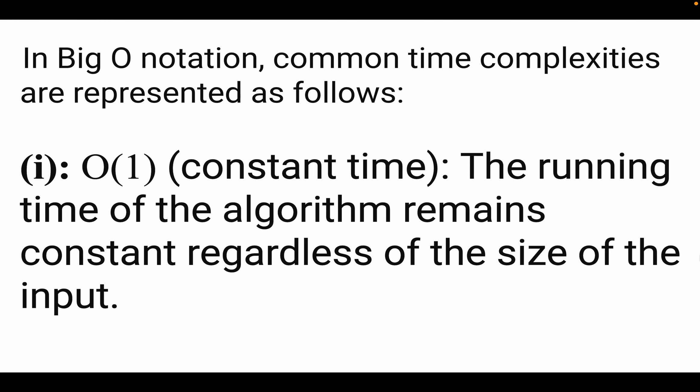In Big O notation, common time complexities are represented as follows. The first one is constant time, represented by O(1). In this case, the running time of the algorithm remains constant, regardless of the size of the input.